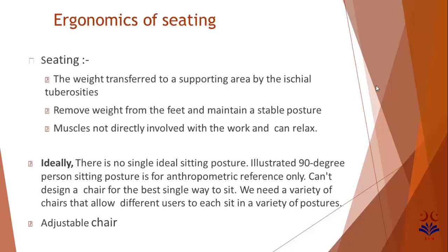There is no single ideal sitting posture. The illustrated 90-degree sitting posture is for anthropometric reference only. We cannot design a chair for one single best way to sit; we need a variety of chairs that allow different users to sit in a variety of postures. The chair should be adjustable to the requirement of the person — their height, weight, arm length, leg length — as body features vary from person to person.